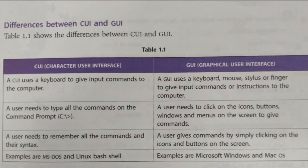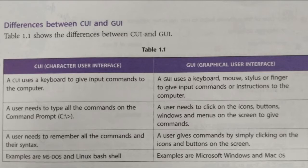Now the differences between CUI and GUI. First point: the full form of CUI is Character User Interface and GUI is Graphical User Interface. Second point: CUI uses a keyboard to give input commands to the computer, while GUI uses a keyboard, mouse, or fingers. In CUI commands are typed, so only a keyboard is used; in GUI, because of icons and buttons, any input device can be used.